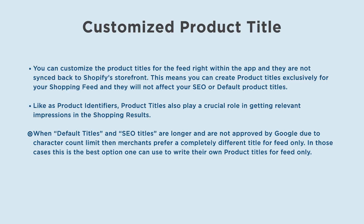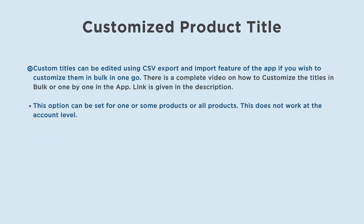Like product identifiers, product titles also play a crucial role in getting relevant impressions in shopping results. When default titles and SEO titles are longer and not approved by Google due to character count limits, merchants prefer a completely different title for feed only. In those cases, this is the best option to write their own product titles for feed only.